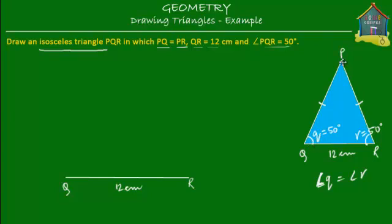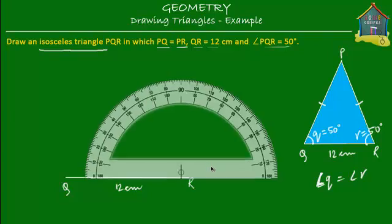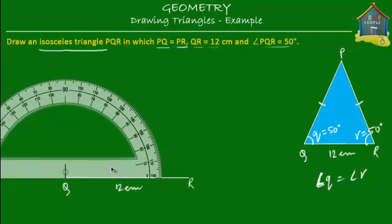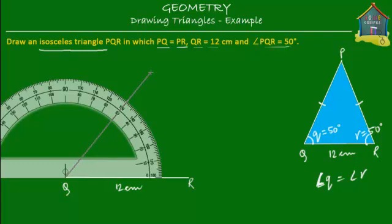Angle Q, or angle PQR, is equal to 50 degrees. Let's take a protractor, put it on Q, and mark an angle of 50 degrees — counting 0, 10, 20, 30, 40, and 50. Put a mark at 50 degrees, then join from Q through that point. So this is 50 degrees.